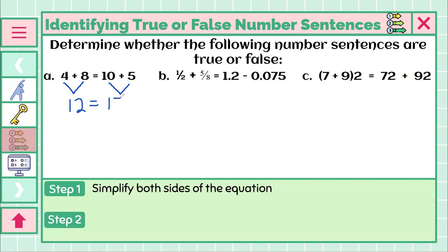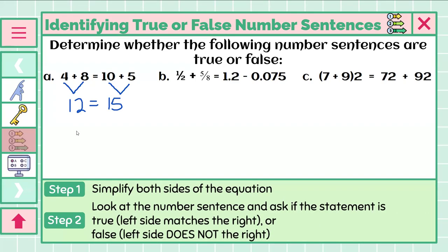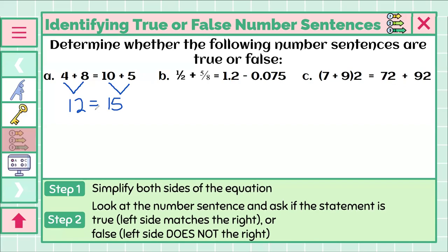So we have now simplified both sides so they each have just a single number. Our step 2 is we need to look at the number sentence and ask if the statement is true, the left side matches the right, or false, the left side does not match the right. Well, I'm sure you can already see that 12 does not equal 15. They are not the same. That means that this is a false number sentence.